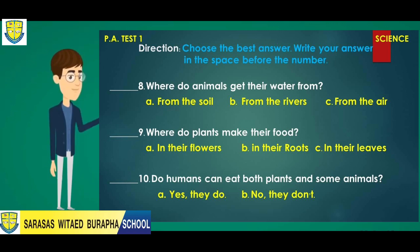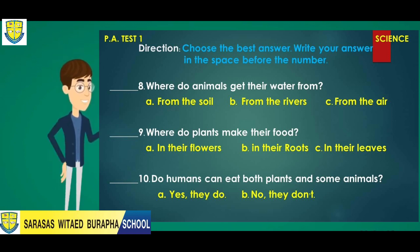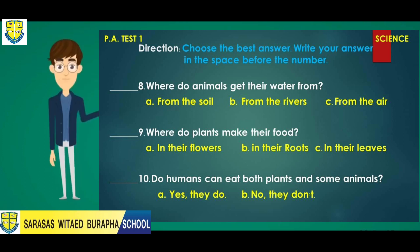Number ten: Can humans eat both plants and some animals? A. Yes, they do. B. No, they don't. Please write your answer before the numbers.